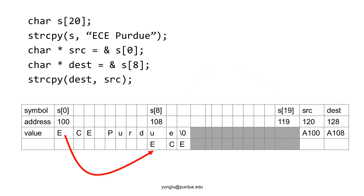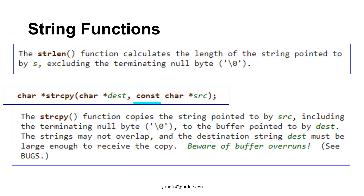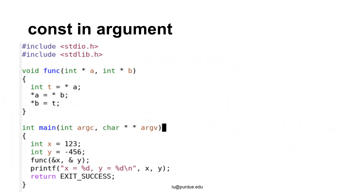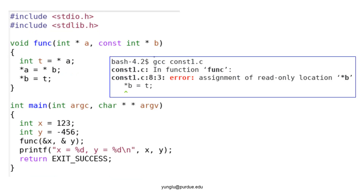What will happen if we use strcpy now? The characters will be copied from the source to the destination. The original string is changed. In the strcpy function, the word const is added in front of the source. What does this mean? Let's consider this example. A function has two pointers, a and b. You probably can recognize this is the swap function. What will happen if we put const in front of b? GCC will issue an error message.